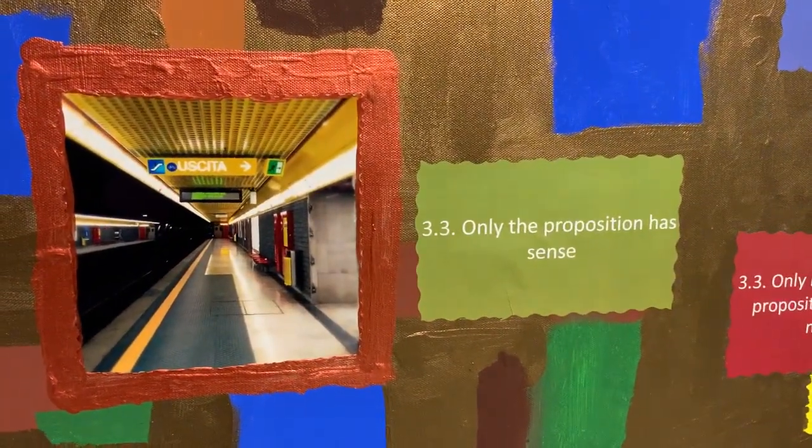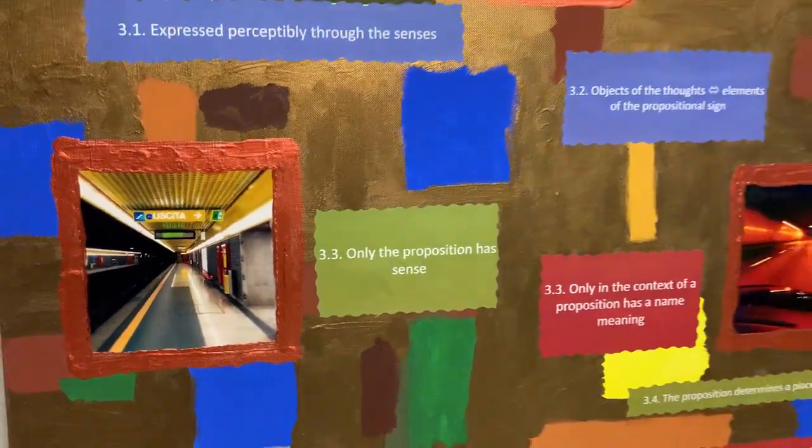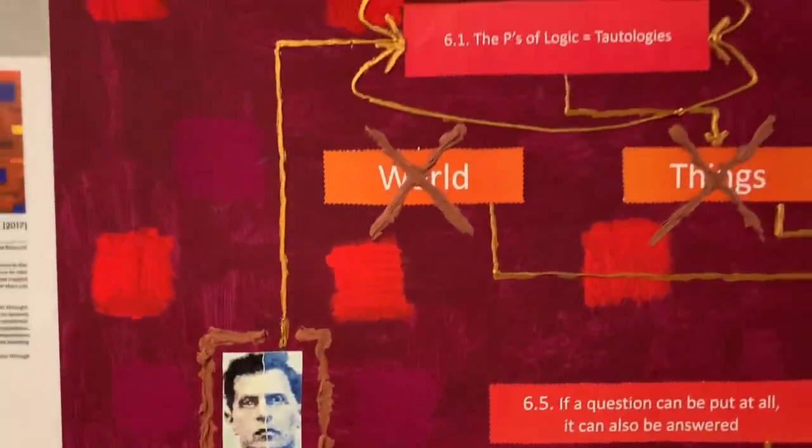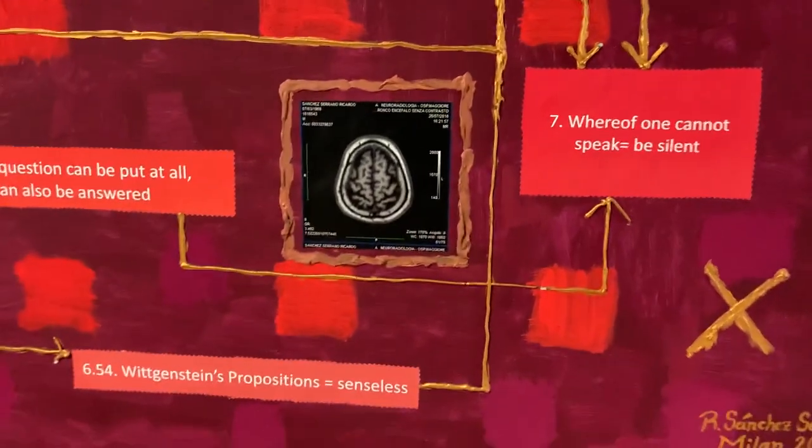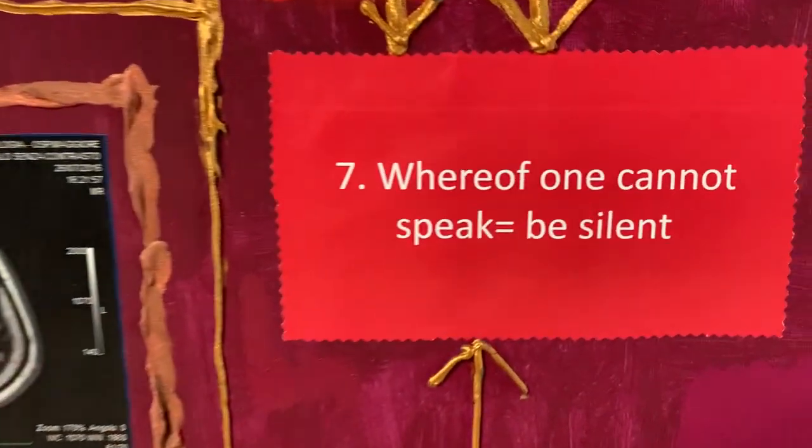And becoming ideas, becoming thoughts that are subject to the verification of truth and falseness. And then the book goes like that and the painting exhibition goes like that up until chapter seven. Chapter seven has only one sentence.